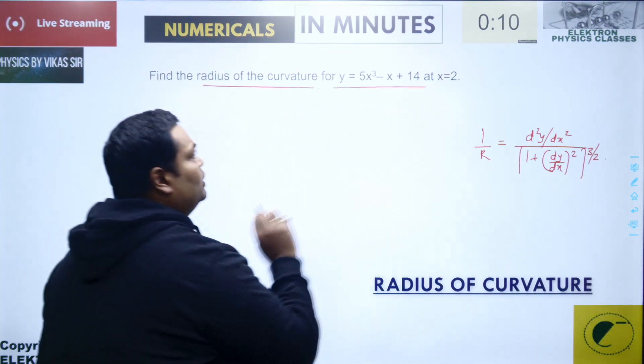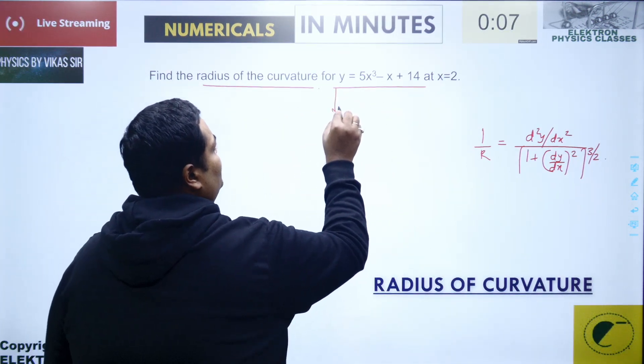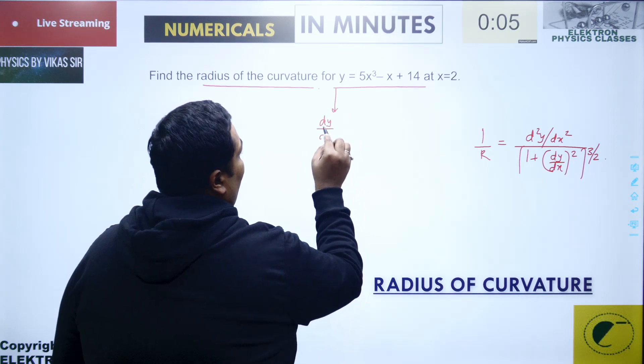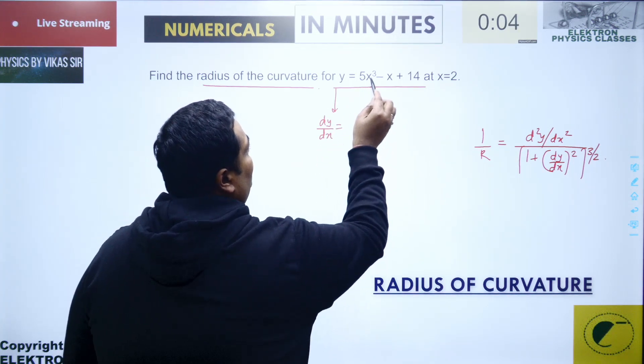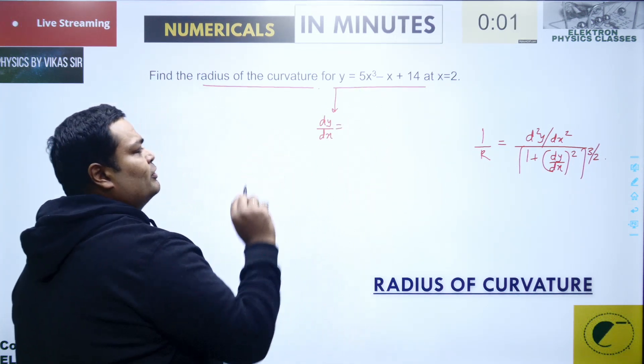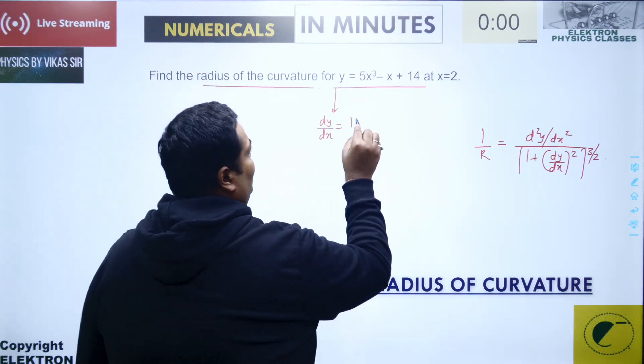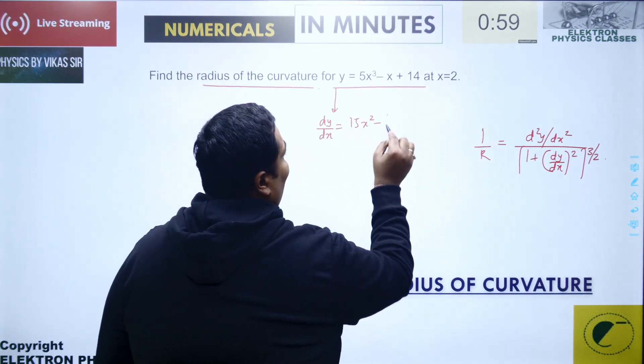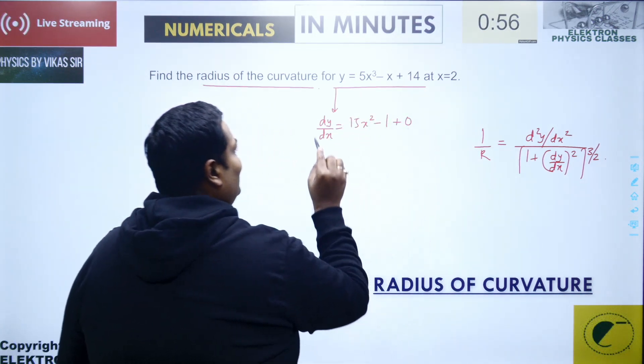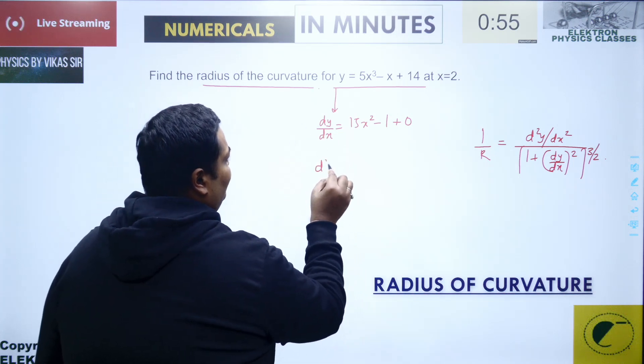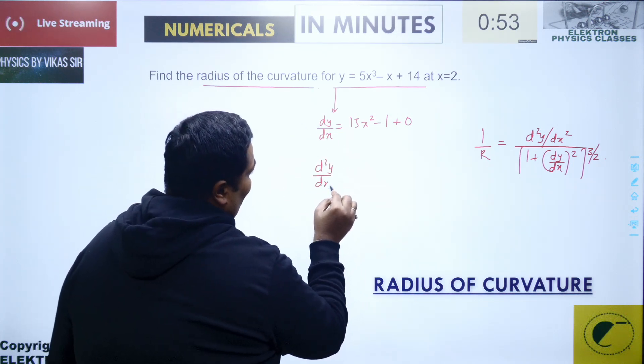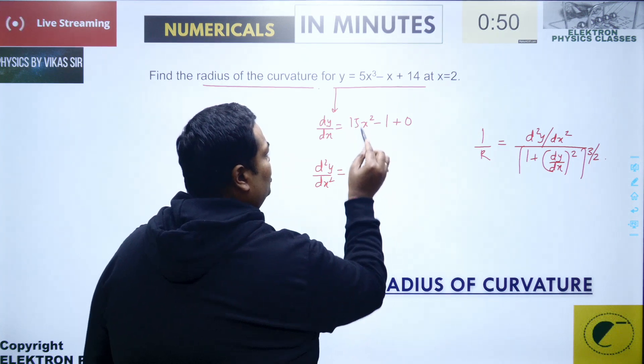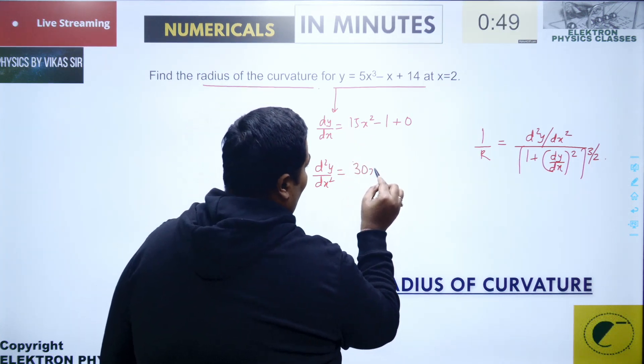Now what am I going to do? I am going to differentiate this function. That becomes dy upon dx that's 5 into x cube, so x cube differentiation is 3x square, that becomes 15x square minus 1. I need to find the double order derivative for this, so d square y upon dx square is 15 into 2x, that's 30x.